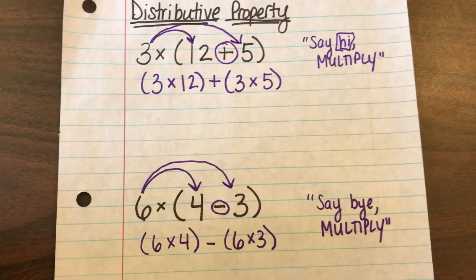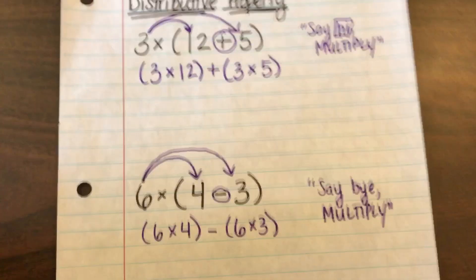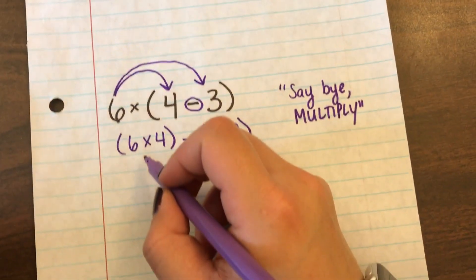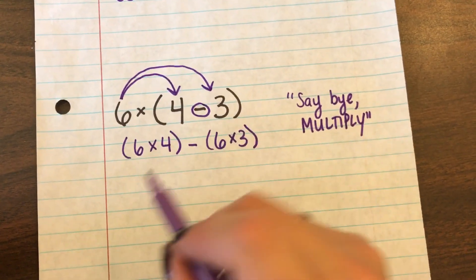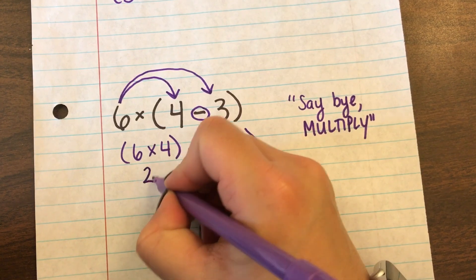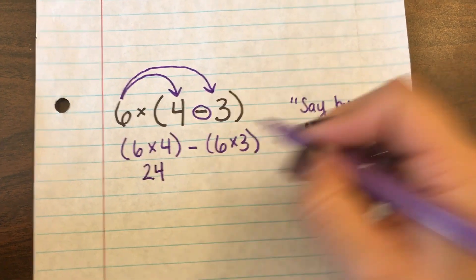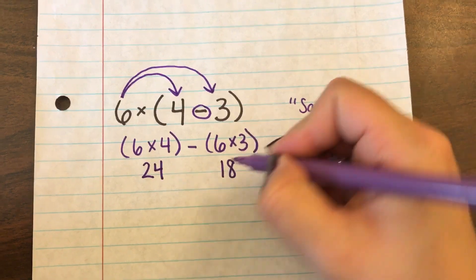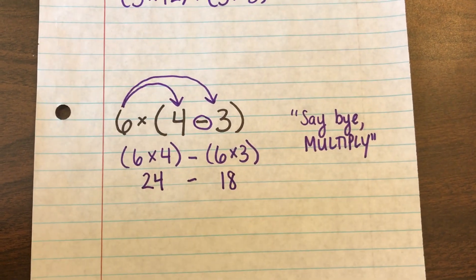So then if it asks you to solve you would actually go ahead and solve it. This is just a different way to write these expressions. So I'm just going to continue with the second one down here. If I needed to continue to solve this I would say 6 times 4 is 24 and over here it says 6 times 3 and I know that that's 18 and I'll keep the minus sign in between.